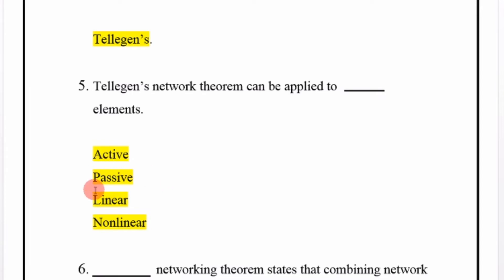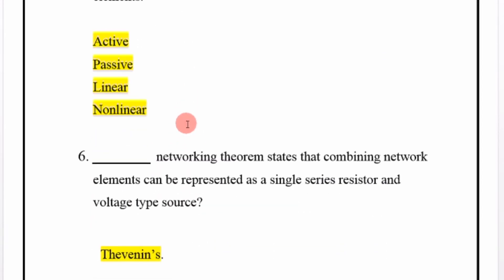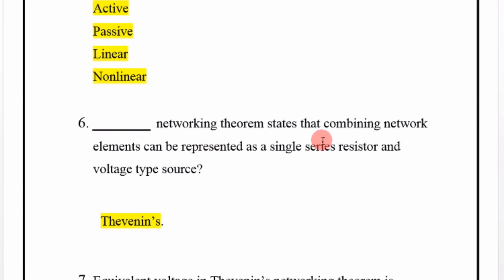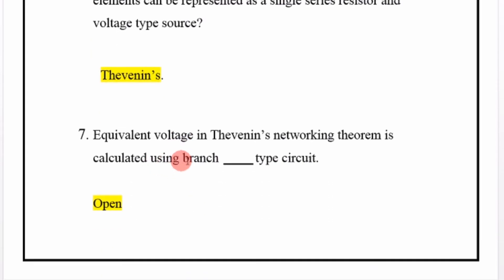Thevenin's networking theorem states that combining network elements can be represented as a single series resistor and voltage-type source. The equivalent voltage in Thevenin's theorem is calculated using an open-circuit branch.